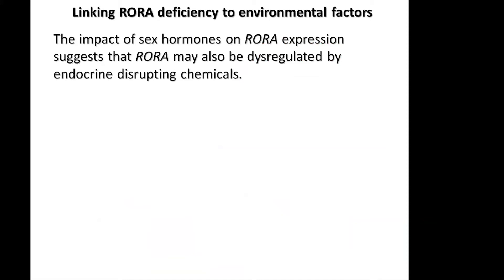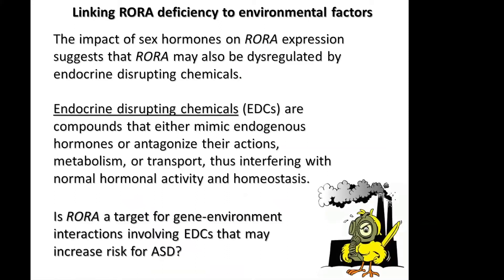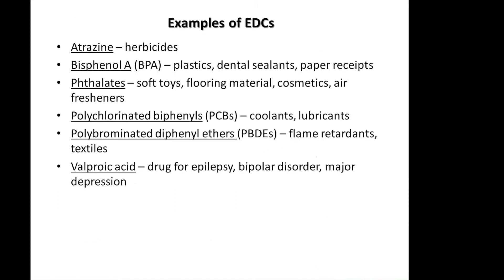The impact of sex hormones on RORA expression suggested to us that RORA may be dysregulated by endocrine-disrupting chemicals. Endocrine-disrupting chemicals are compounds that either mimic endogenous hormones or antagonize their actions, their metabolism, or transport, thus interfering with normal hormonal activity and homeostasis. We wanted to know whether we could use RORA as a canary in a coal mine — is it a target for gene-environment interactions involving endocrine disruptors that may increase risk for autism?